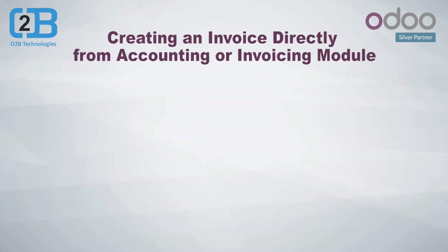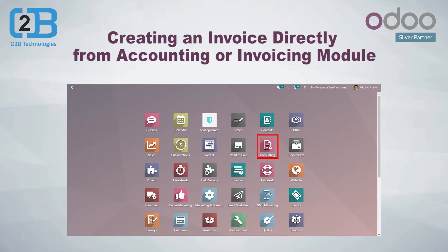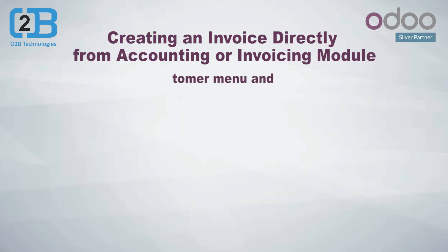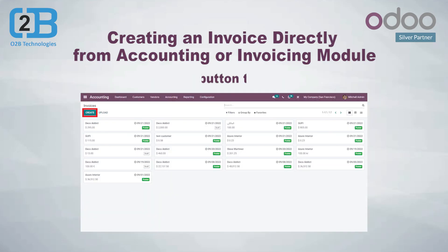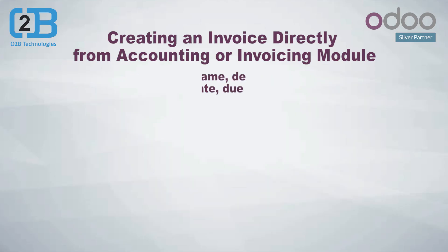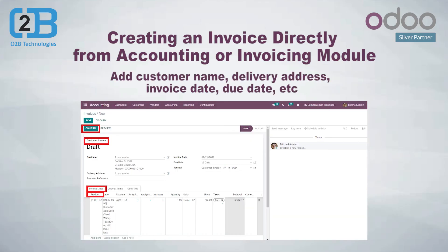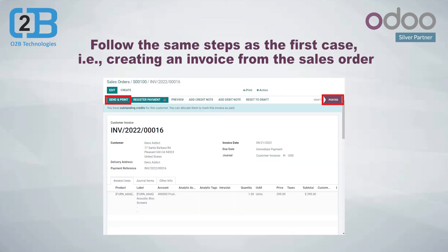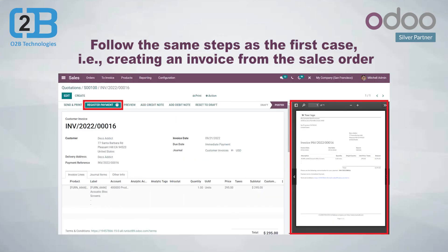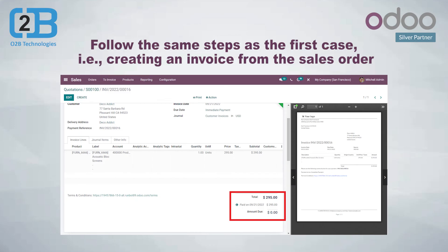Creating an invoice directly from the accounting or invoicing module — moving to the second method of creating an invoice. Create an invoice directly from Odoo's invoicing or accounting module. In the accounting module, you need to click on the customers menu and select invoices. Click on the create button to create an invoice. Here you need to add the details like customer name, delivery address, invoice date, due date, and journal. Then add the products in the invoice lines and save. Now you need to follow the similar steps mentioned in the first scenario of invoice creation, which is creating an invoice from a sales order.